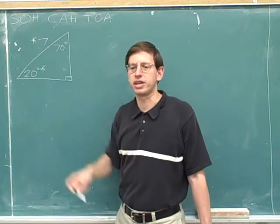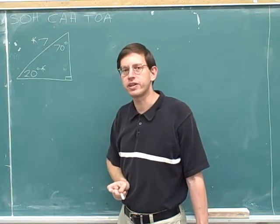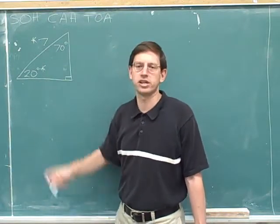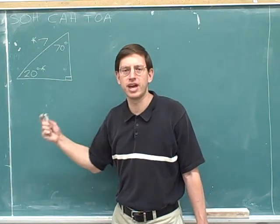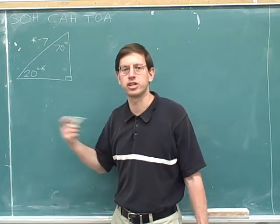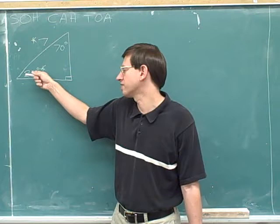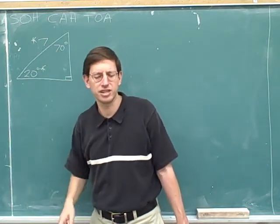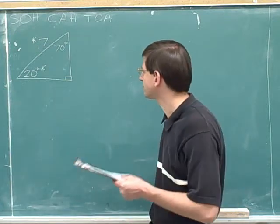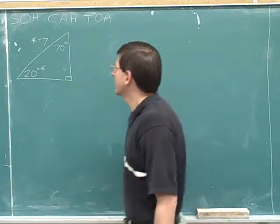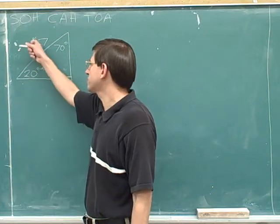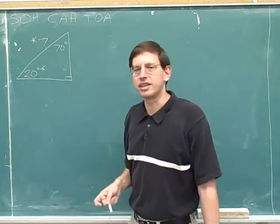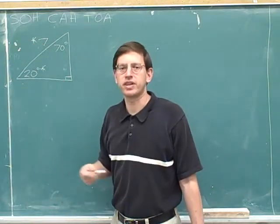But I'm not going to put an asterisk over here because the convention is that you try to figure things out using the angle you were originally given. There's no reason why you have to do that mathematically, but that's what people conventionally do. So we're going to keep trying to figure stuff out using the 20. We're not going to use the 70 to figure more stuff out because that's just not what is usually done. Okay. Now notice that I also have this asterisk on the 7, indicating that obviously I'm going to try to use the 7 to figure stuff out.